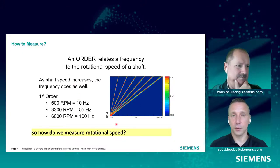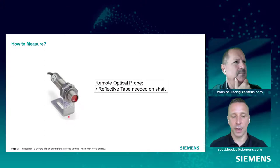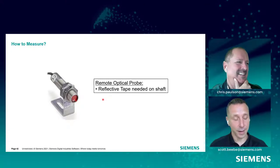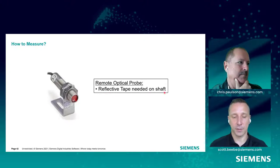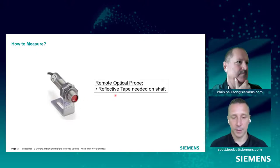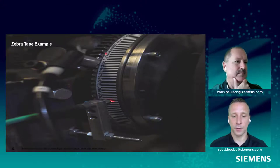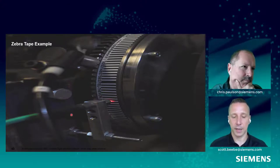How do we measure these orders? We have to measure the rotational speed of a reference shaft, and everything is based off that. We measure shaft speed using a tachometer sensor — this is an optical tachometer sensor. To use it, we need reflective tape on the shaft; as that reflective tape passes the sensor, we get a pulse measured by the acquisition system. This is a multiple pulse per rev measurement, where white segments of the tape passing the optical sensor each generate a pulse.